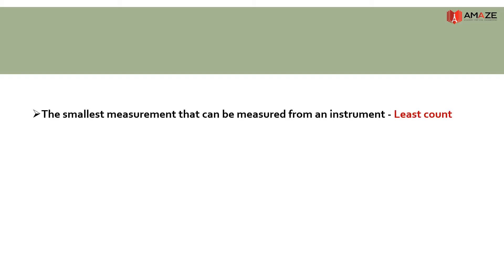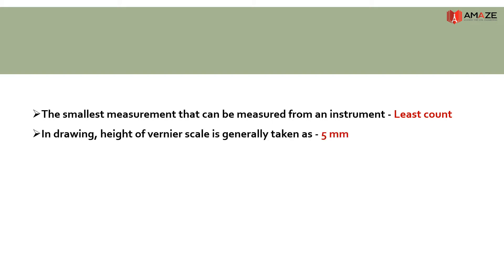The smallest measurement that can be measured from an instrument is its least count. In drawing, the height of the vernier scale is taken as 5 mm, while the plain scale height is 10 mm.